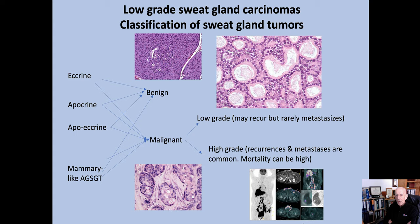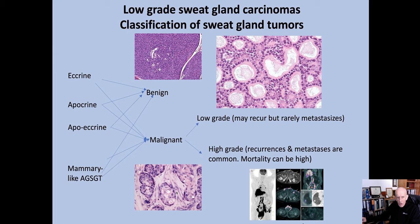I planned to talk about low-grade sweat gland carcinomas. In the old days, one of our main issues was trying to determine whether a tumour was of eccrine or apocrine derivation. Over the years, it's become obvious that that's rather a futile exercise and of no great value to anybody. The important thing really is to decide whether a tumour is benign or malignant. At the top we have a poroma, and at the bottom we have ductal differentiation and a malignant eccrine poroma.